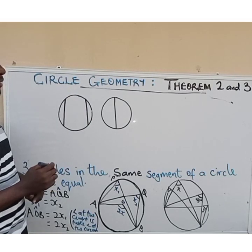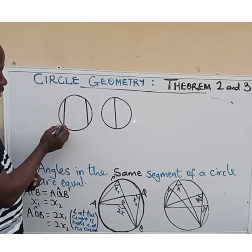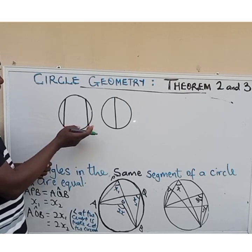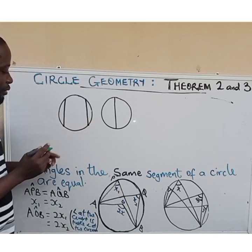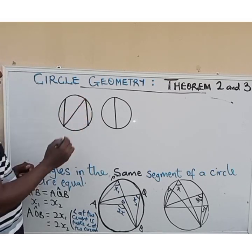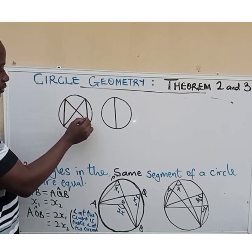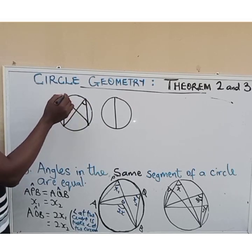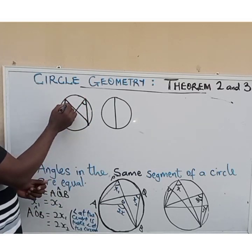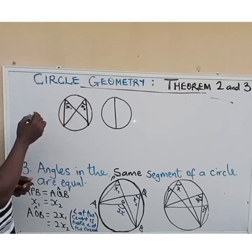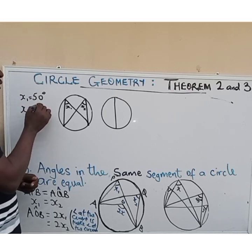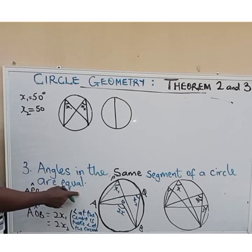Now talking about angles in the same segment, we are going to have two chords. The chord forms a point on the circumference — these points on the circumference are called the arc. So the segments form angles: one angle here and another angle here. These angles are in the same segment, so if this is x1, then x2 is also 50 degrees — they are equal.